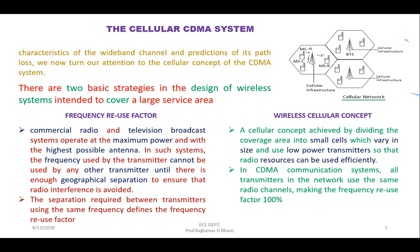Commercial radio or television broadcasting systems operate at maximum power with the highest possible antenna requirement. The need for maximum power and highest possible antenna is to cover the maximum area. The height of the antenna must be very high so it can radiate energy to that extent, and maximum power is required to cover longer radial distances.